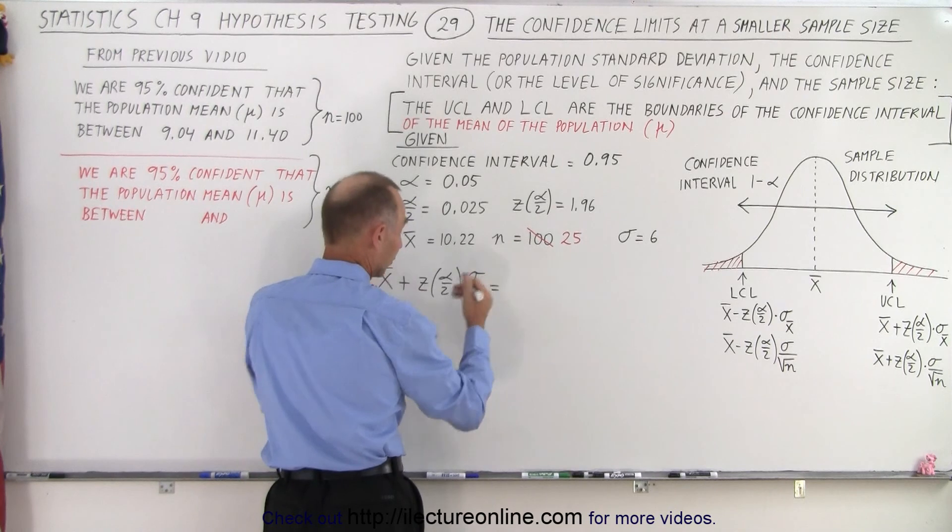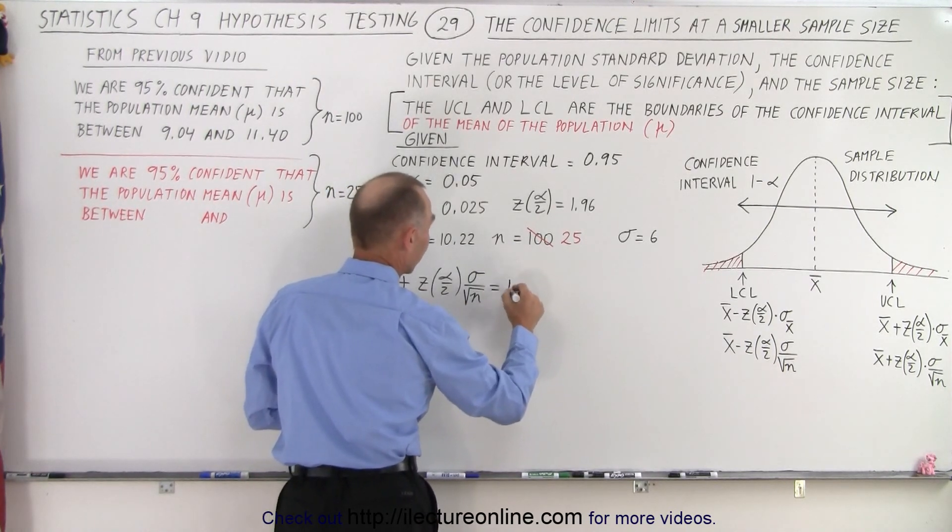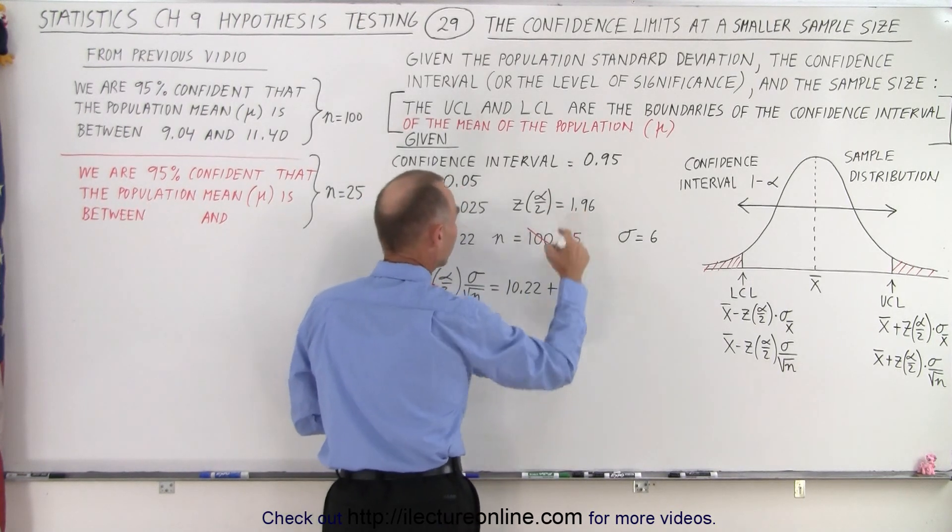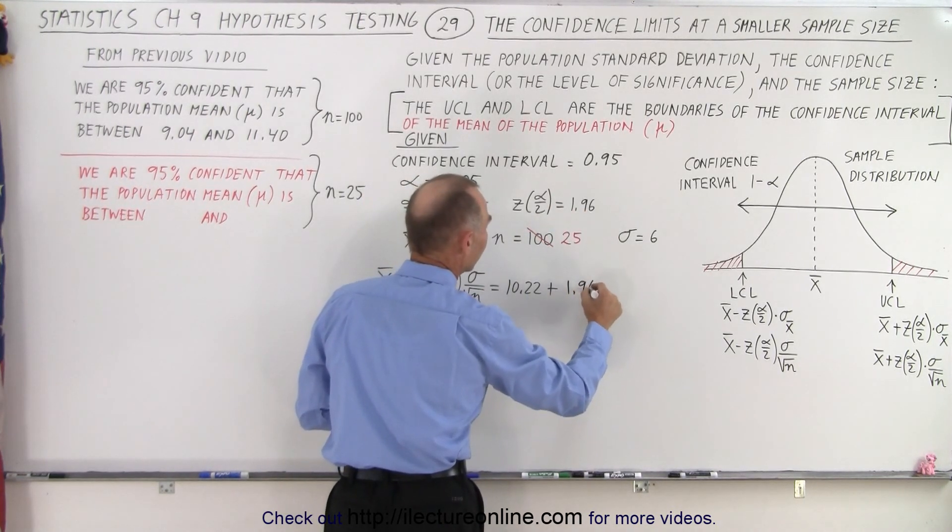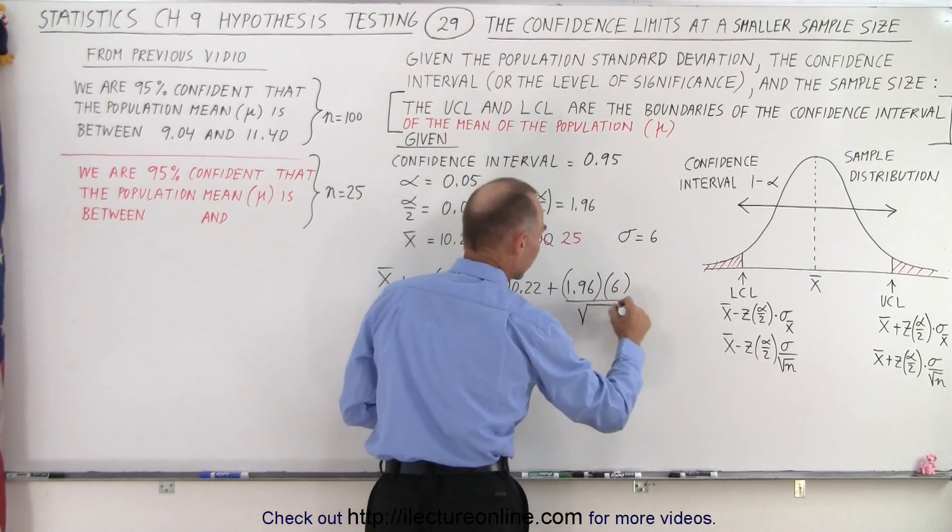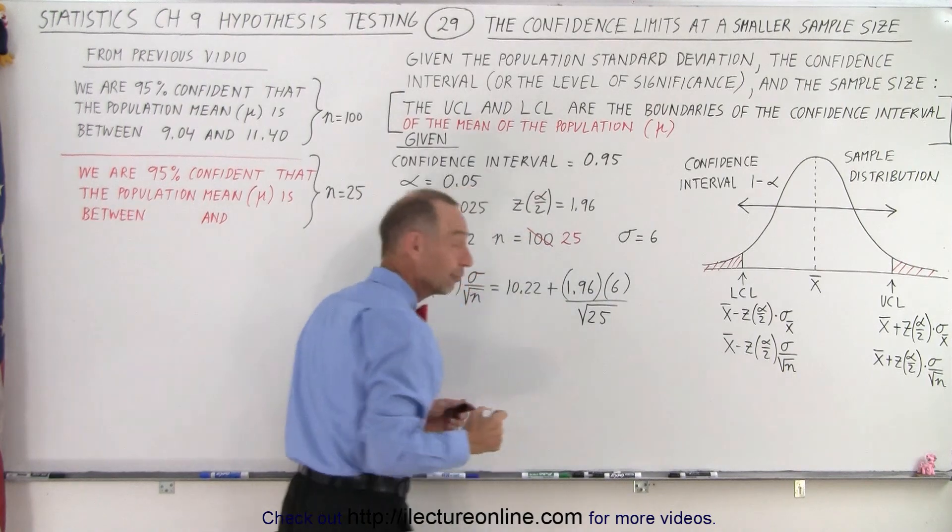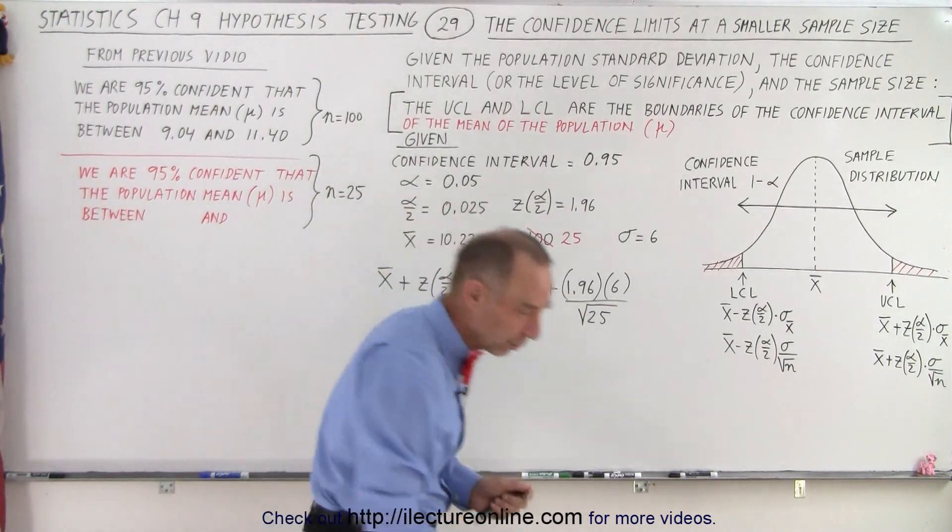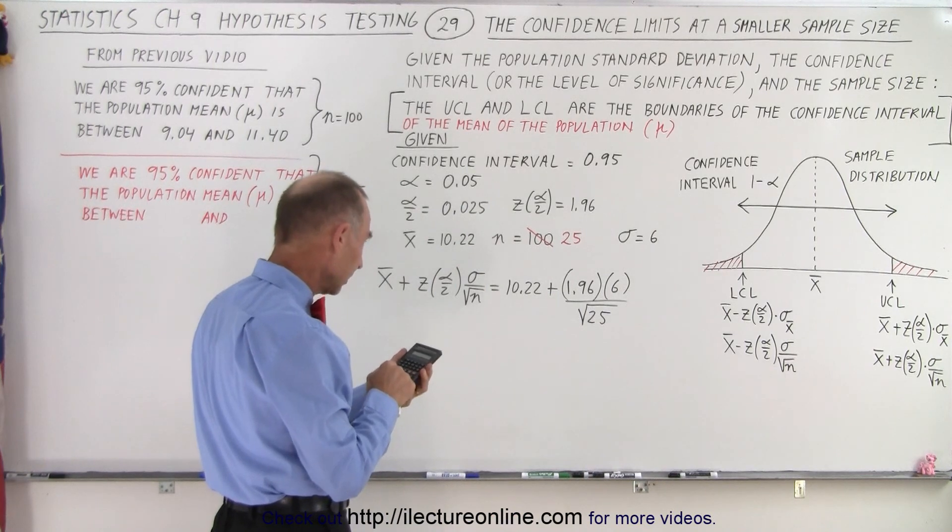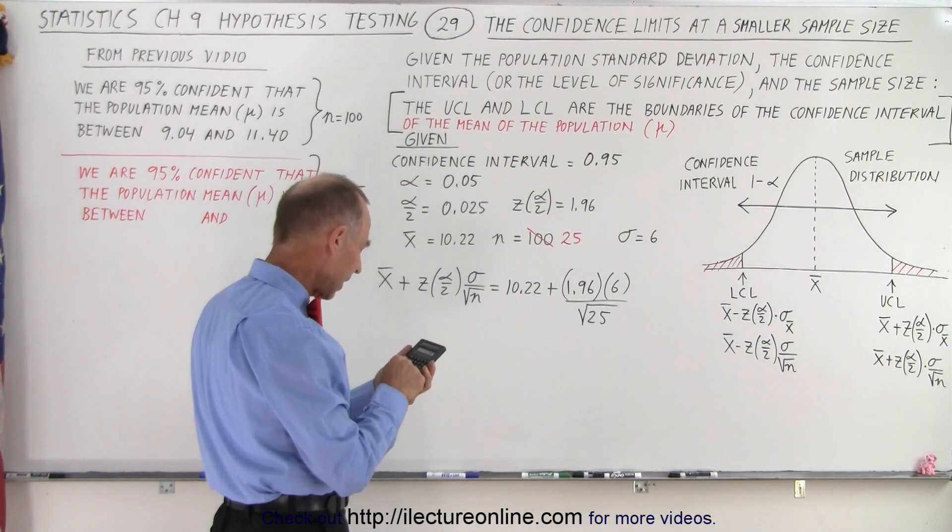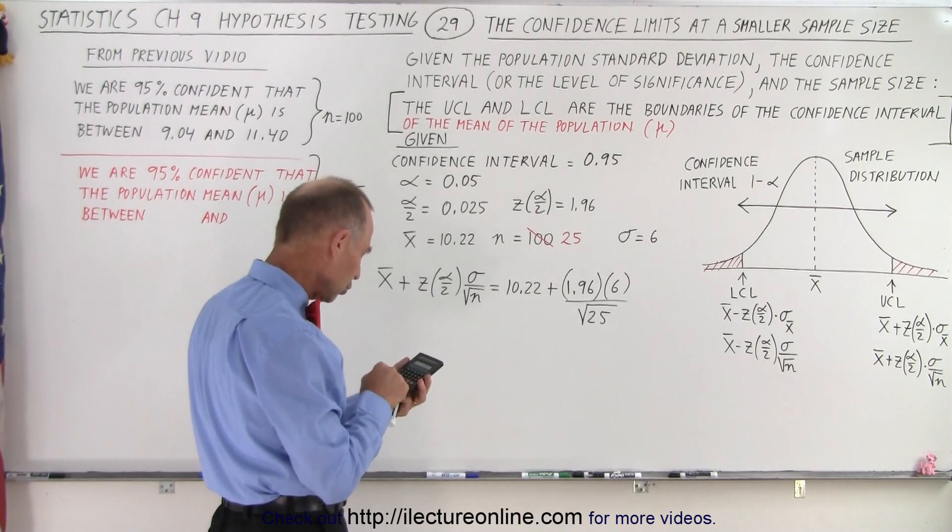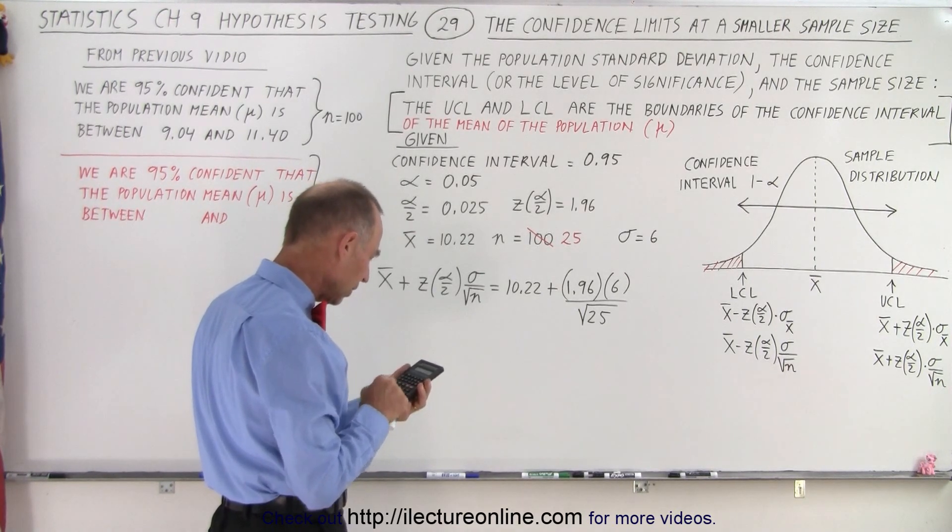That means this is going to be a bigger error. So we end up with 10.22 plus, now we're back to 1.96 for the z-score. The standard deviation is still 6, but now we divide it by the square root of 25 instead of the square root of 100. So 1.96 times 6 divided by 5, and we add that to 10.22 and we get 12.57.